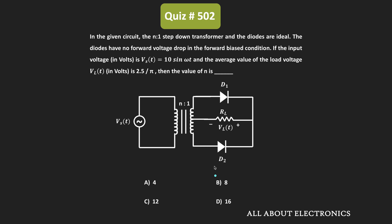That means here the forward voltage drop of the diode is equal to zero. The input to the circuit is equal to 10·sinωt, and we have been given that the average value of the load voltage VL is equal to 2.5/π. So we have been asked to find the value of n.